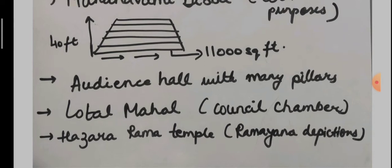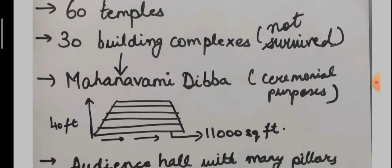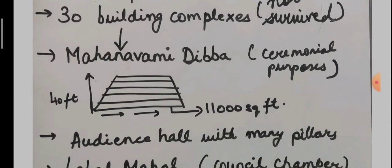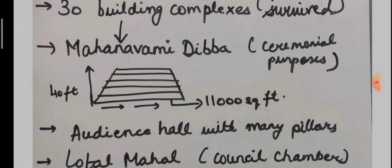several rituals that were associated with the Mahanavami Dibba. Mahanavami basically means the great ninth day or the tenth day of the Hindu festival during the months of September and October, also known as the Durga Puja or Navratri in various parts of India. This festival was organized on a very huge scale